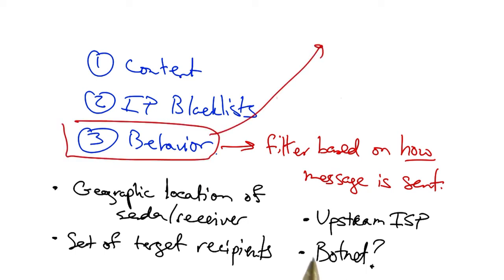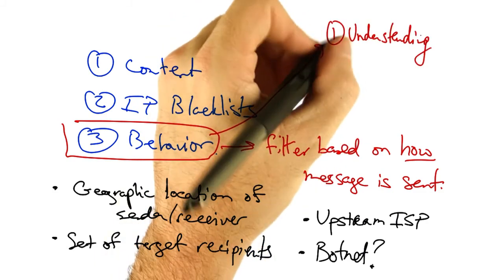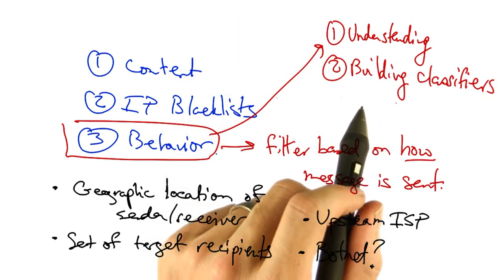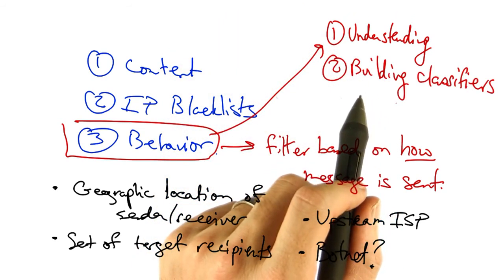Now the challenges of building a filter around this notion are first, understanding network-level behavior, and second, building classifiers using network-level features to execute the filtering.